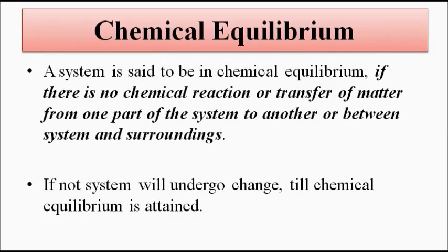Chemical equilibrium: a system is said to exist in chemical equilibrium when there is no chemical reaction taking place within the system and no transfer of mass or matter — chemical products or otherwise — from one part of the system to another or between the system and the surroundings. If the system is not in chemical equilibrium, there will be a transfer of mass between the system and the surroundings until chemical equilibrium is attained.